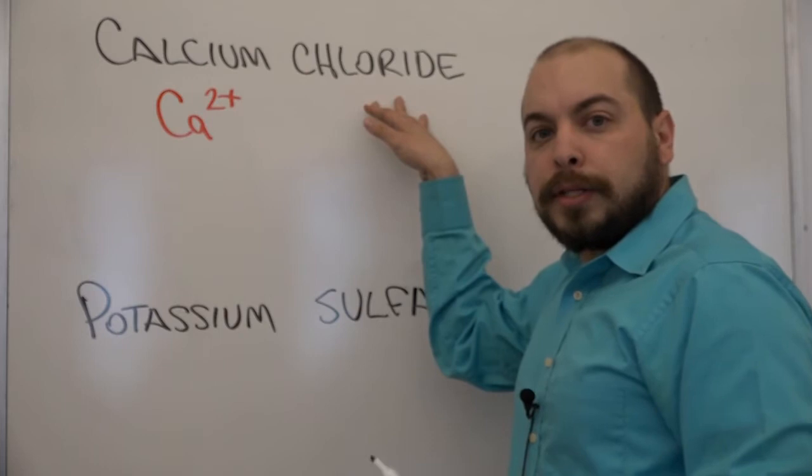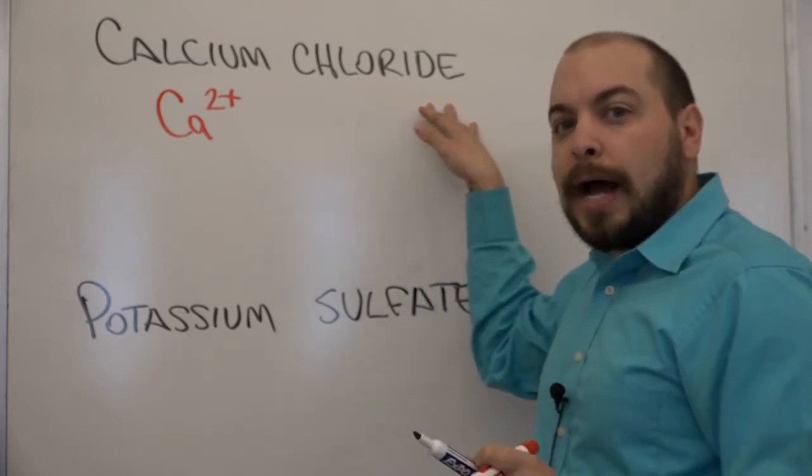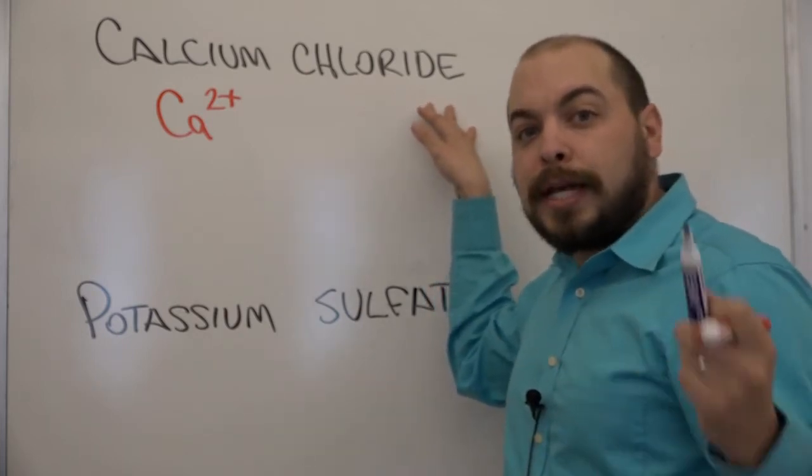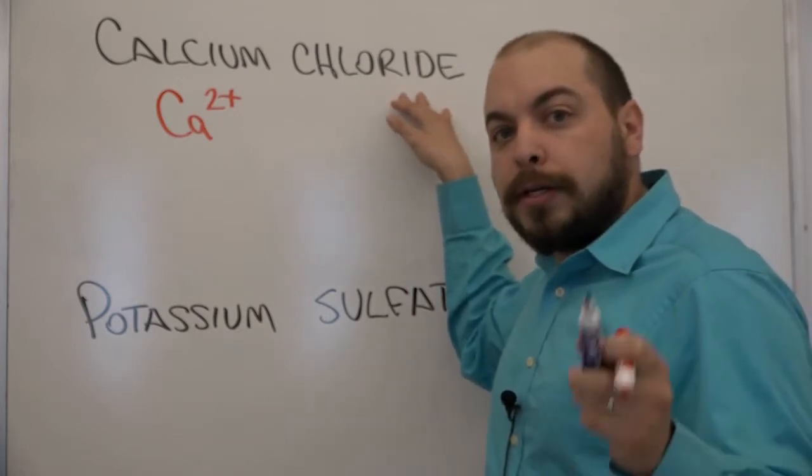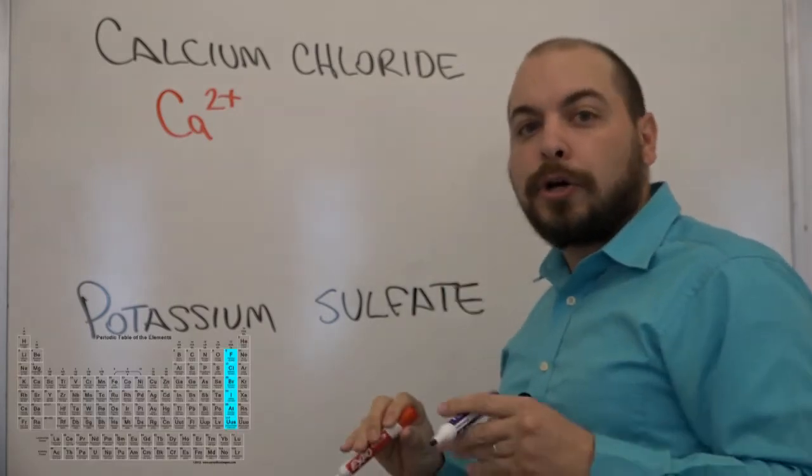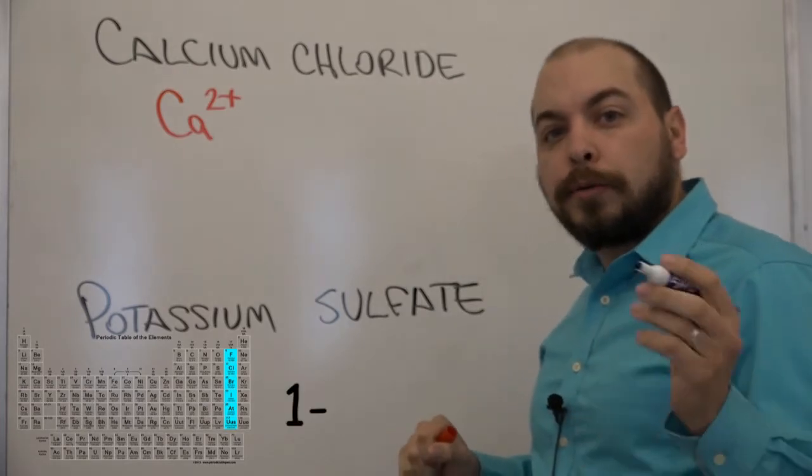For the second component the anion, remember if it ends in IDE then you're simply looking at the elemental form. This means we're looking at the elemental form of chlorine. Chlorine because it's a halogen has a charge of negative 1 therefore we're going to write that now.